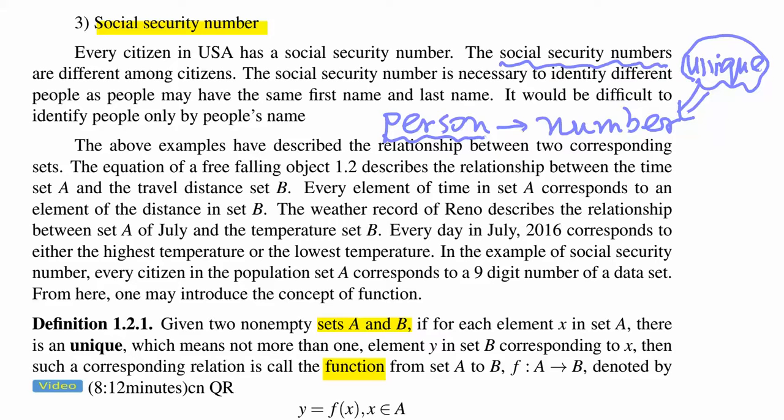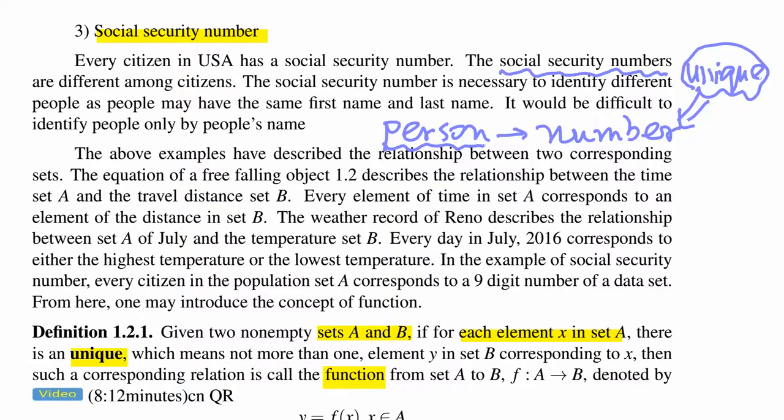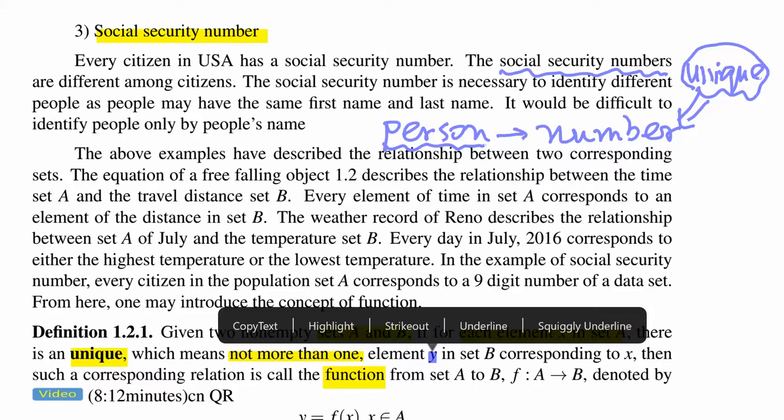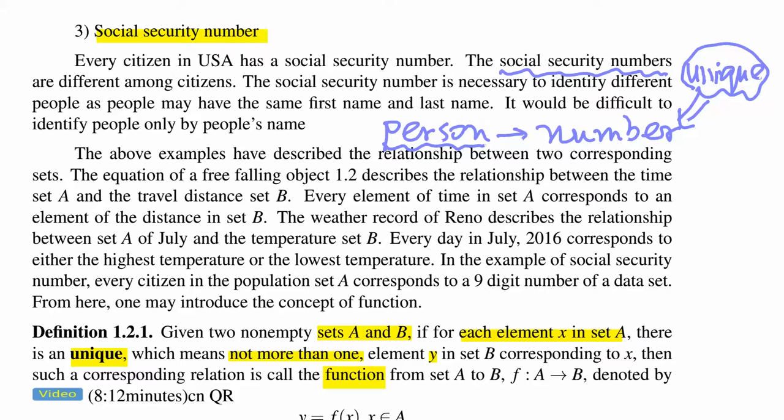Then if for each element, for each element X in set A, there is a unique, there is a unique element. Unique means what? Not more than one. That means unique. Okay. There is a unique element Y, unique element Y in set B, in a different set, in set B.